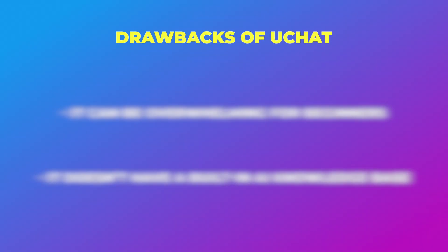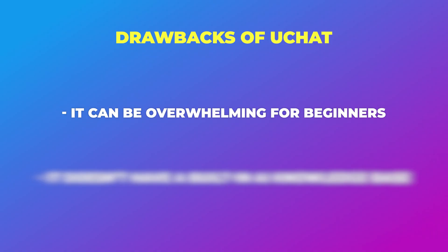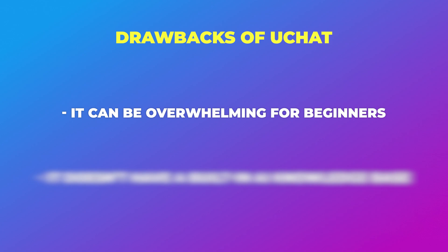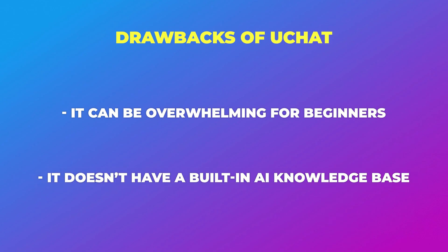There are a few drawbacks of uChat. Because uChat has many features, it can be pretty overwhelming for beginners. So if you're just a content creator wanting to create a few simple automations, uChat might not be the right fit. But if you're a larger business or an agency, uChat might be better. Another drawback is that it doesn't have a built-in AI knowledge base. So if you're looking for a platform with more advanced AI features, then you should have a look at Botpress.